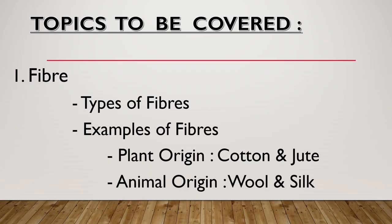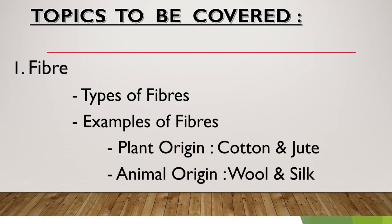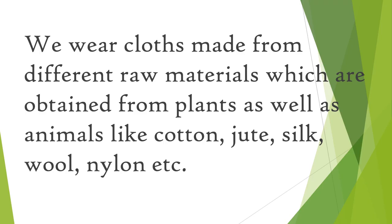Some fibers are of plant origin, like cotton and jute; some are of animal origin, like wool and silk. You all know we wear clothes made from different raw materials obtained from plants as well as animals — like cotton, jute, silk, wool, nylon, etc. However, in our syllabus, we will be focusing only upon some natural fibers: a few of plant origin and a few of animal origin.